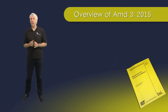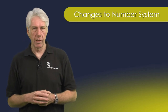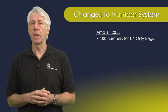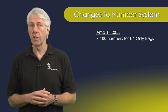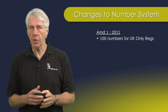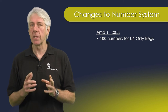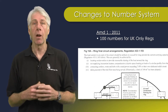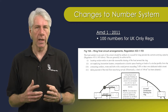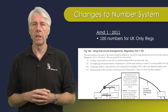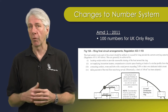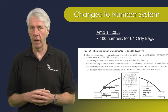Let's first take a look at a tweak to the number system. When Amendment 1 was introduced in 2011, some regulation numbers were altered to have numbers in the hundreds inserted at the end. This was to highlight regulations that were specific to the UK, so for example any regulation concerning ring final circuits, which are primarily used in the UK, would have a 100 at the end — for example, 433.1.103.